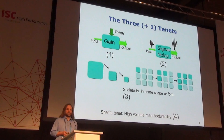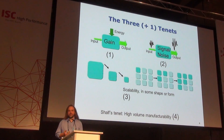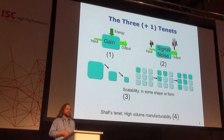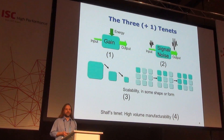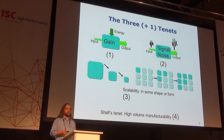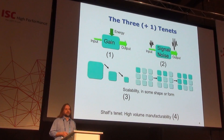Then there's the plus-one tenet, which is the shelf limit: it needs to be friendly to high-volume manufacturing. If I can't manufacture to scale, I'm done — I cannot use this technology. I need to drive this ecosystem to keep making forward progress, to be able to say these four things are true.